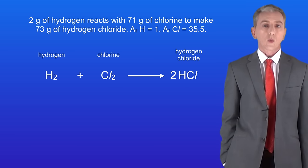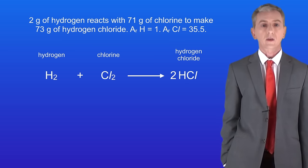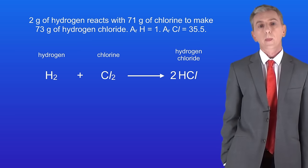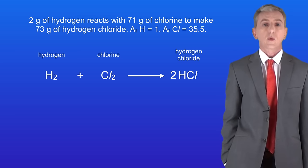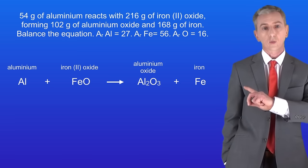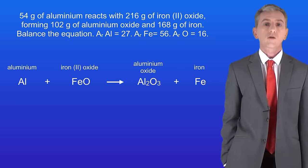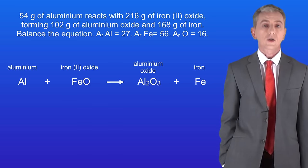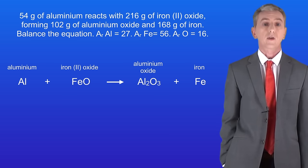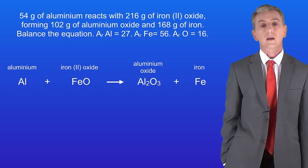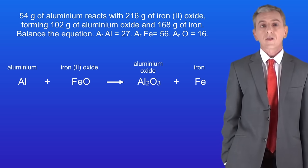All we have to do now is remove the number 1 in front of the hydrogen and the chlorine, as we don't write 1 in chemical equations. Now you might be thinking what's the point of balancing equations using this method, especially easy ones such as this. Well this method works really well when the equation is more complicated, such as this one: 54 grams of aluminium reacts with 216 grams of iron oxide, forming 102 grams of aluminium oxide and 168 grams of iron. Balance the equation. You should pause the video now and try this yourself.